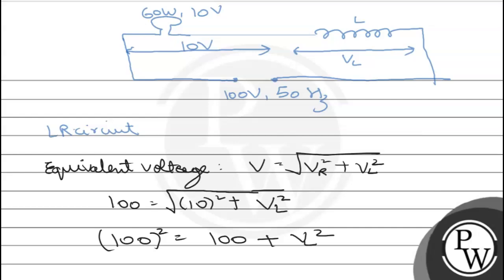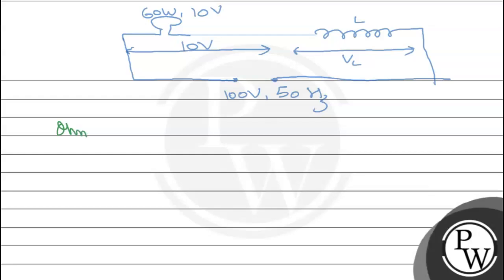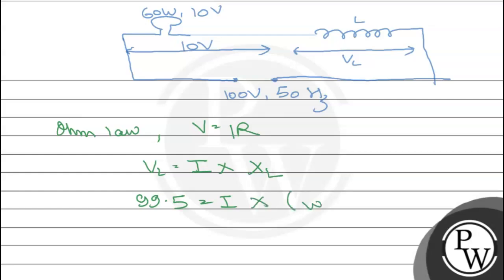Calculate करने पे VL आ जाएगा 99.5 volt। Now Ohm's law के according voltage V = IR। अगर हमें inductance के across voltage निकालना है, so VL = I × XL (reactance of the inductance). So voltage है 99.5, current is I, and XL का formula होता है ωL।